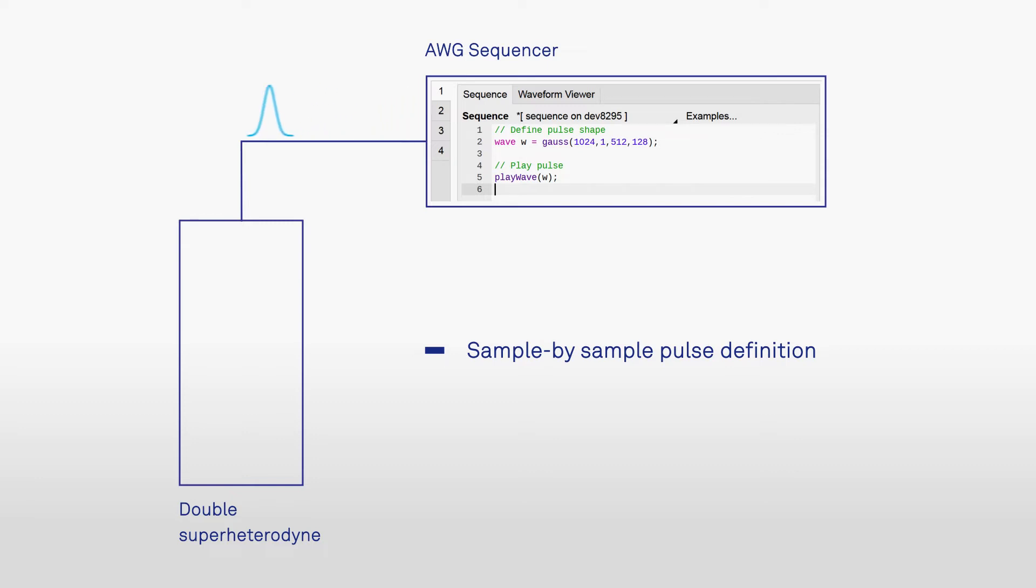The digital waveforms then go through the double superheterodyne process, which is a two-stage frequency up-conversion and filtering technique that ensures a clean, stable signal, making it easier to achieve high gate fidelities.